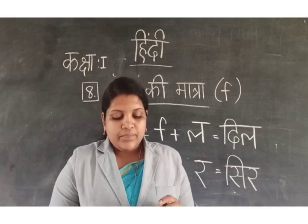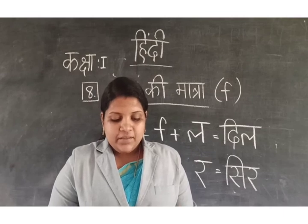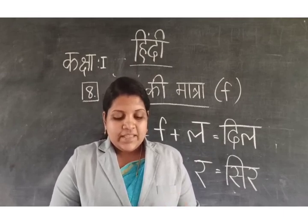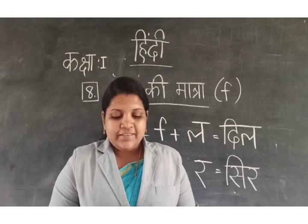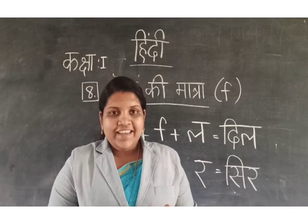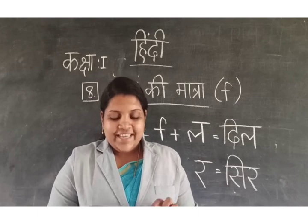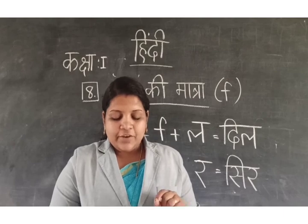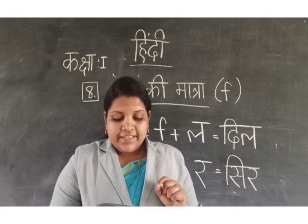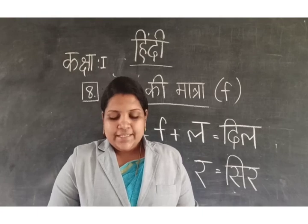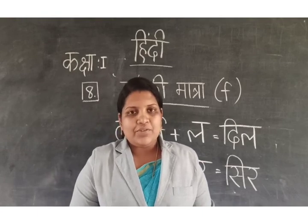The first box — read with me: Him, Ravi, Kiran, Shikar. The second box: Din, Kavi, Kisan, Nikati. The third box: Chit, Chavi, Guitar, Chidya. Rest of the two boxes you have to read by yourself.